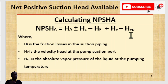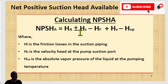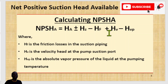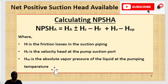When calculating your NPSHA, take note of the units — all parameters, including absolute pressure, static head, frictional head losses, velocity head at the pump suction port, and vapor pressure, must all be expressed in meters. This gives you the NPSHA, which is the net positive suction head available — the energy available at your pump suction to prevent cavitation.